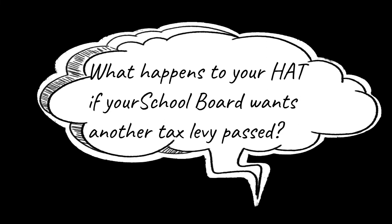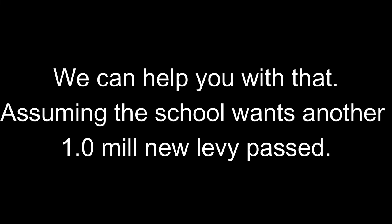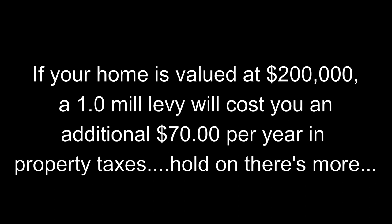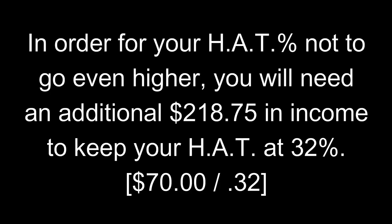What happens to your HAT percentage if your school board wants to pass another levy? Let's assume that your school board wants to pass a 1 mil levy. The easiest calculation we have found is to use $35 per mil for every $100,000 of home valuation. If your home is worth $200,000, the levy will cost you an additional $70 per year in property taxes. Here is what most people do not realize: in order to not move closer to the 30% unaffordability threshold, in our example, you would need to earn an additional $218.75 each year to keep your HAT percentage at 32%.